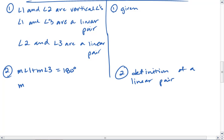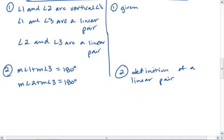We also know then that the measure of angle 2 plus the measure of angle 3 equals 180 degrees. And this is for the same reason, so we will also leave that as statement 2.